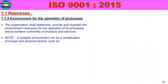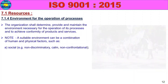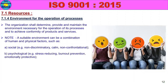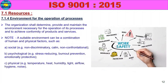A suitable environment can be a combination of human and physical factors. Human factors include: social, non-discriminatory, non-confrontational, and psychological factors — for example, stress reduction, burnout prevention, and emotionally protective environment.